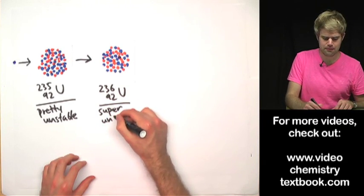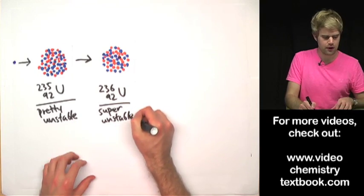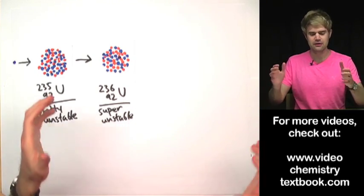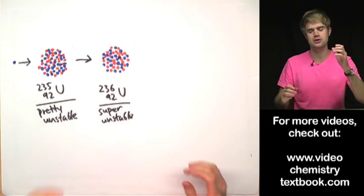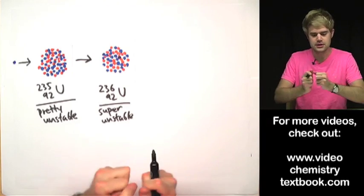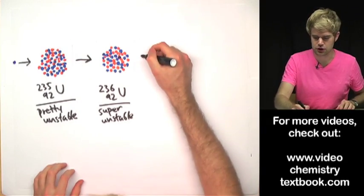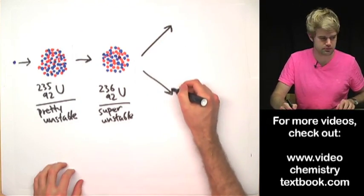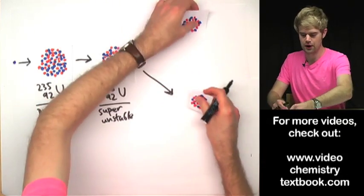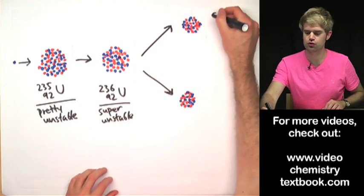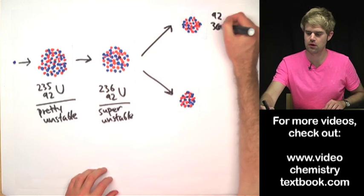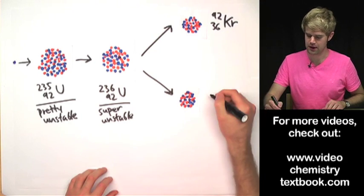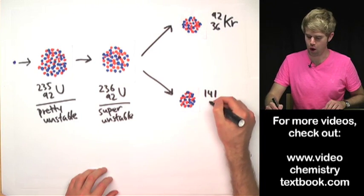It is way more unstable than uranium-235. In fact it's so unstable, so unhappy that it splits into two smaller atoms. Here are the nuclei right here. One of them is Krypton-92 and the other is Barium-141.